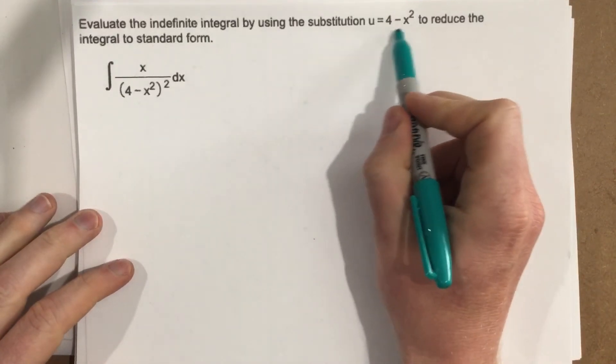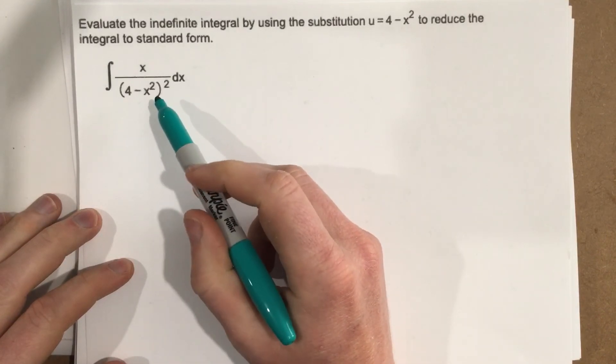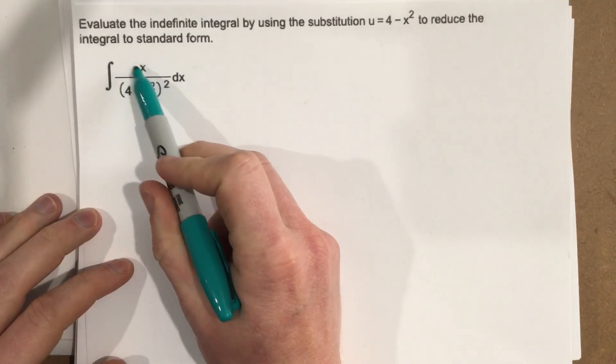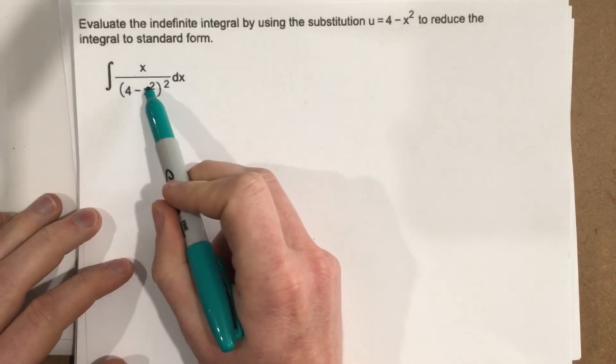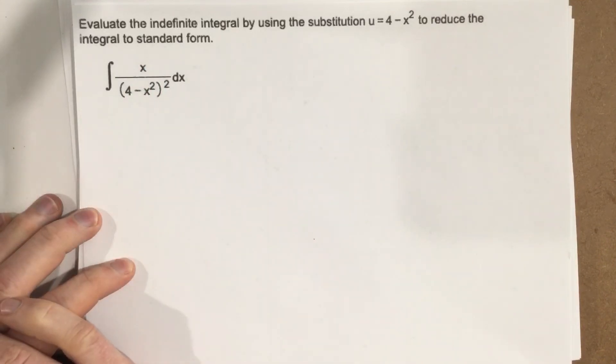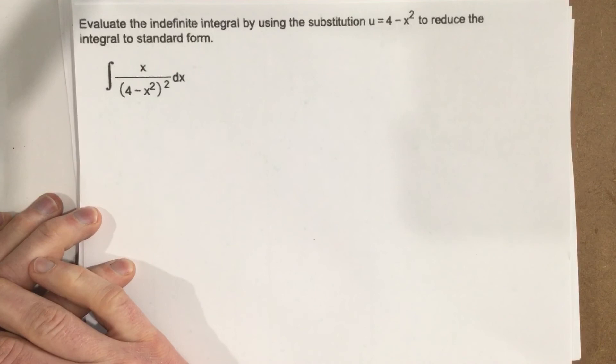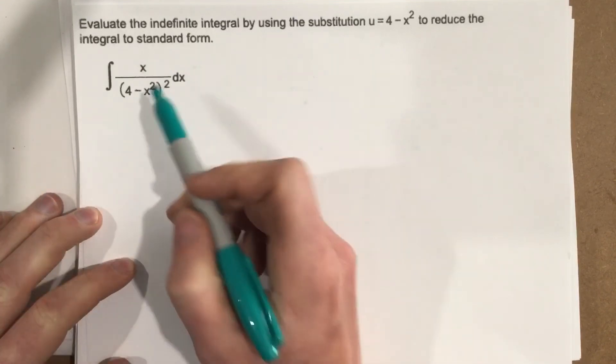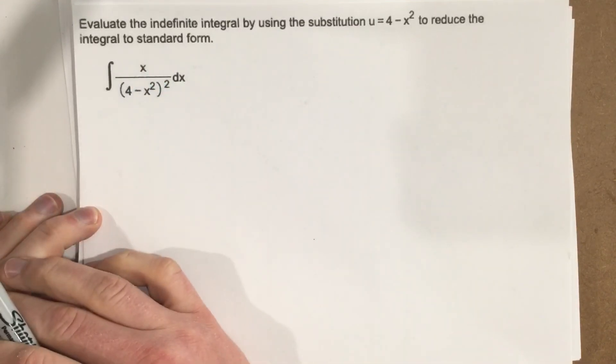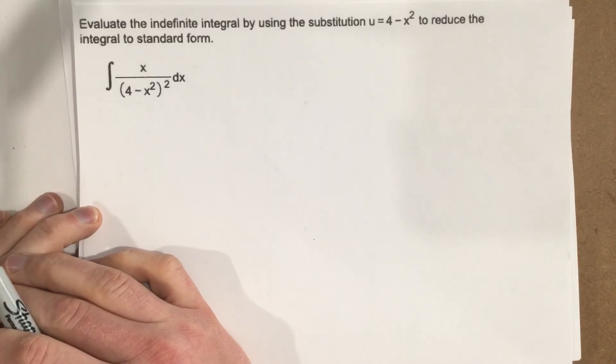they give us the u-substitution. So remember, we're trying to decide whether or not we want the top to be u or the bottom 4 minus x squared to be u. And our goal is to cancel out all the x variables so that we just end up with u variables. Because right now how this is sitting, we're not able to integrate this. We want to get this into a simpler form so that we can use our integration rules to integrate this.